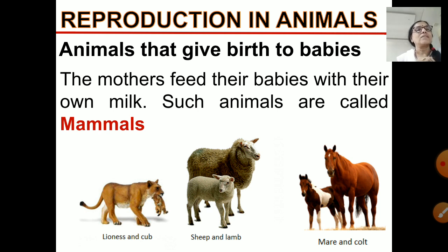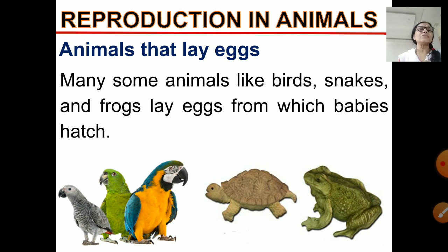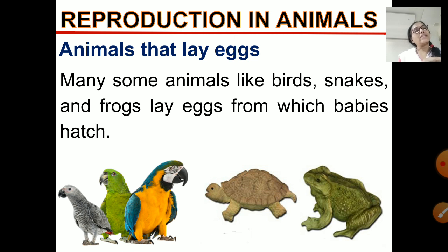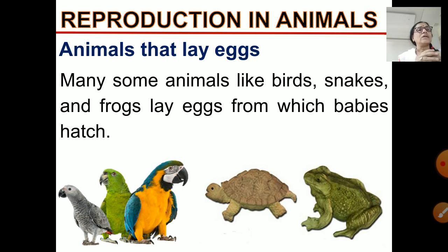There are also other animals that reproduce by laying eggs. The babies are formed inside the egg, and when they become mature, they hatch out. These animals include birds, snakes, frogs, fish, and crocodiles — they all reproduce by laying eggs.